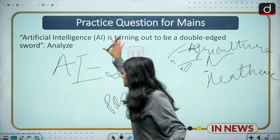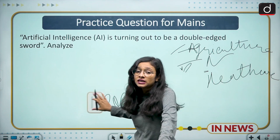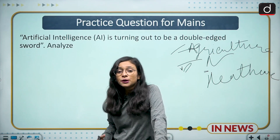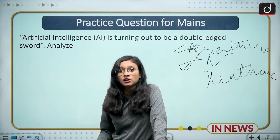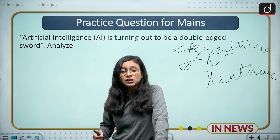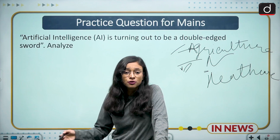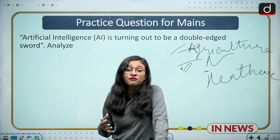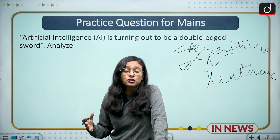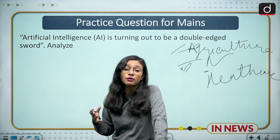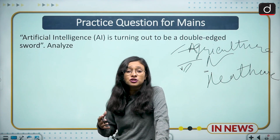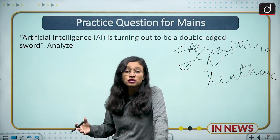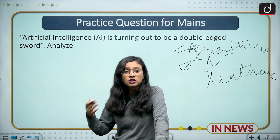Recently we have seen people alerting the Government of India that their Aadhaar data has been stolen. Whether it has been stolen or not, AI has the biggest role to play in spreading such rumors. It can also be used to create stereotypes against any person. For example, Barack Obama never said anything about Donald Trump using the word 'dipshit,' but with the help of deepfake technology, that video was created and widely circulated, ruining his image. Similarly, in India, politicians' words are being misrepresented through AI technology.